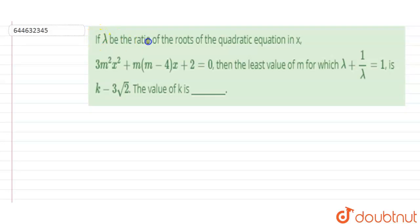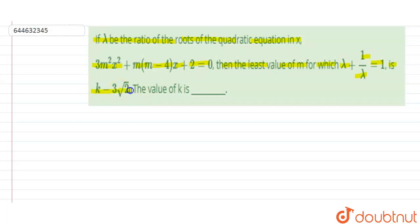The question is: if lambda be the ratio of roots of the quadratic equation in x, where the equation is 3m²x² + m(m−4)x + 2 = 0, then the least value of m for which lambda + 1/lambda = 1 is k − 3√2. Find the value of k.